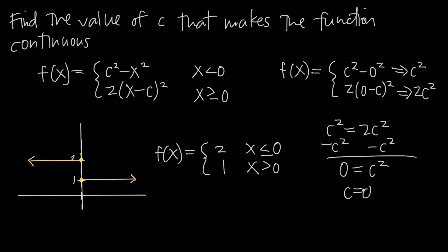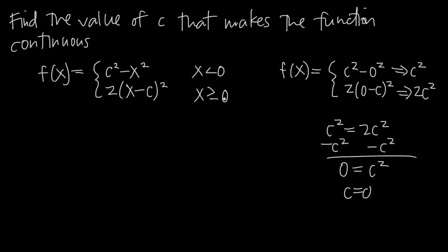Now, the definition of continuity tells us that the left-hand limit must exist, the right-hand limit must exist, and those limits must be equal to one another. We found that c equals 0 makes the function continuous, but we need to verify this by proving the left and right-hand limits both exist and are equal. Just as we plugged in x equals 0 to reduce the function in terms of c, we now plug in c equals 0 to reduce the function so it's only in terms of x.